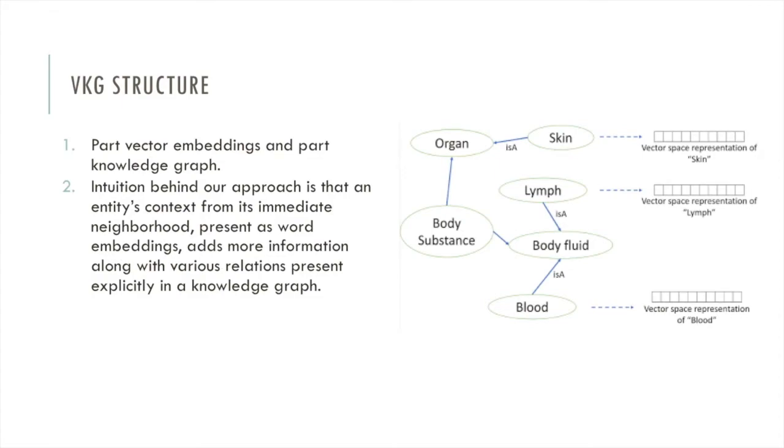To overcome limitations of both and take advantage of their complementary strengths, we have developed the VKG structure that is part knowledge graph and part vector embeddings. Together, they can be used to develop powerful inference methods.